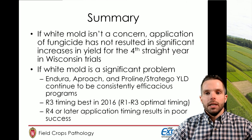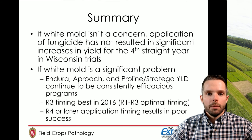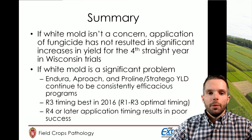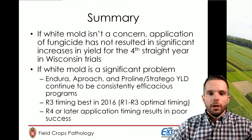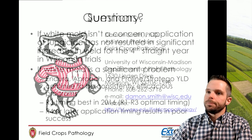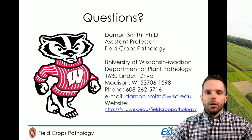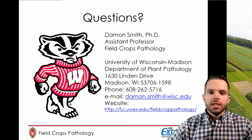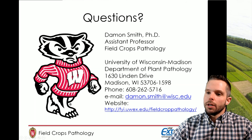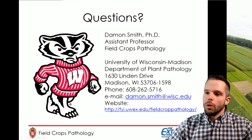To summarize: if white mold isn't a concern, application of fungicide has not resulted in a significant increase in yield for the fourth straight year in Wisconsin field testing trials. But if white mold is a significant problem, the Endura, Approach, Proline, or Stratego Yield programs seem to be the best programs here in Wisconsin. Make sure you get the growth stages right — we want that R1 to R3 window to be the optimum timing. After about R4, you're not going to see much success out of those programs. If you're looking for more information about fungicides, disease management, or disease identification in general, I would encourage you to consult my website. Thank you.